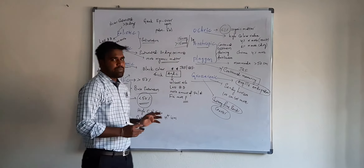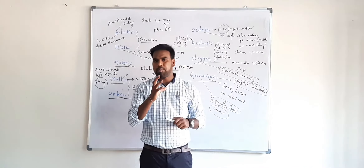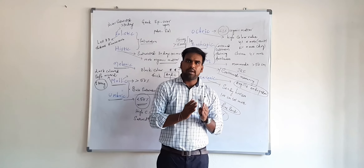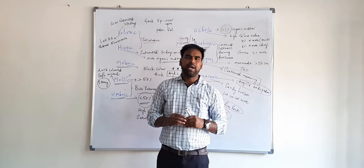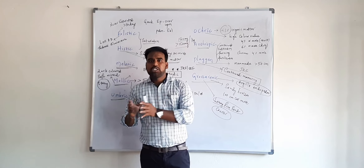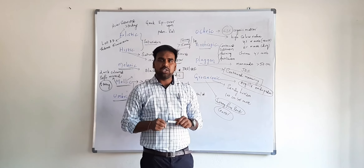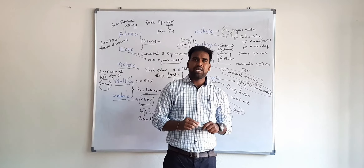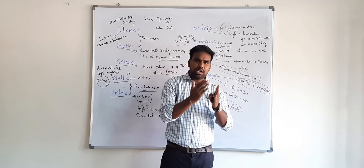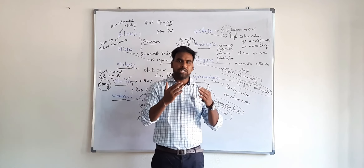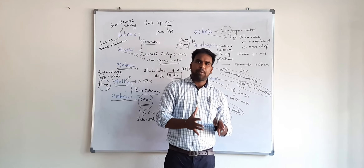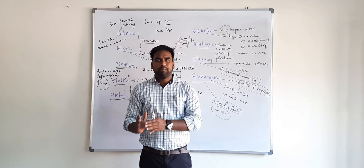This is all about epipedans. For JRF and SRF examination, remember: anthropic epipedan is formed due to continued cultivation, but plaggen epipedan is formed due to continued maneuvering — plaggen also shows spade marks and artifacts such as bricks and pottery. The difference between umbric and mollic is base saturation — mollic has greater than 50% and umbric has less than 50%. Ochric epipedan has less than 1% organic matter, while mollic epipedan has 1% or more.